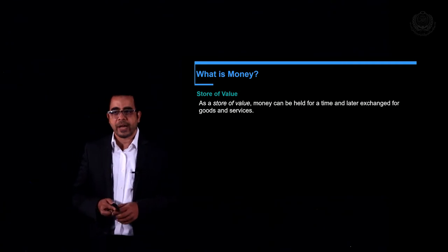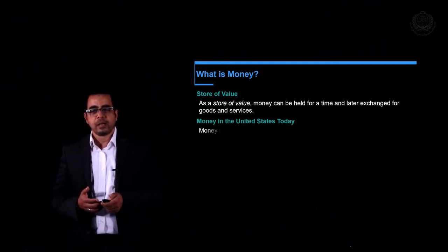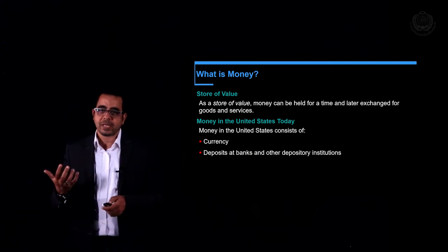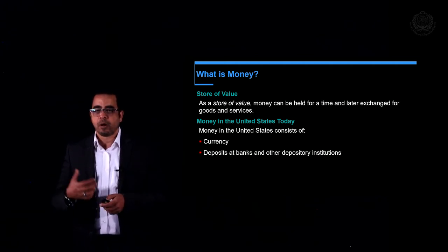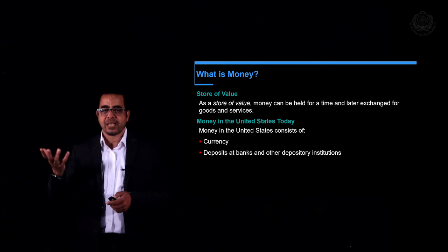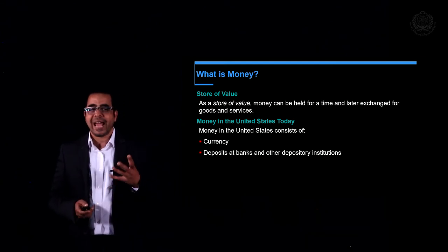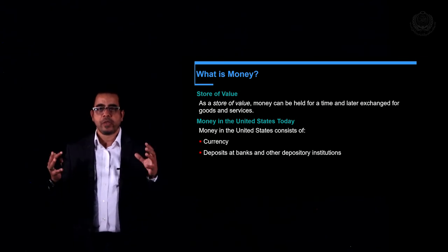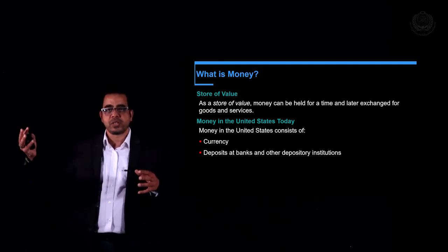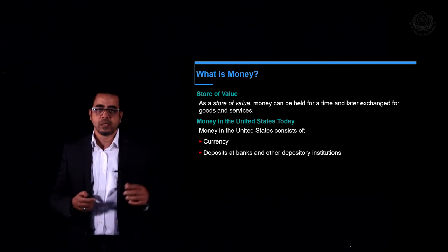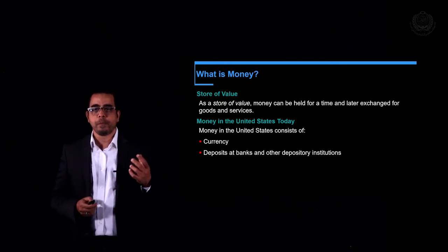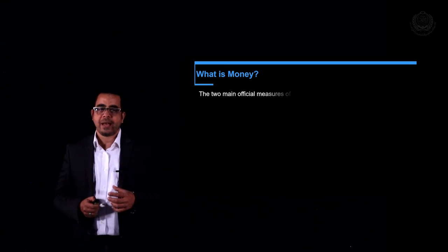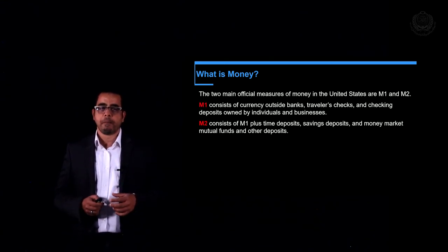If we define money in our modern days, it is the currency we hold in our wallets, homes, and hands, plus deposits at banks and deposit institutions. Deposit institutions are institutions that receive deposits and make loans. We have two measures for money: the narrow measure and the broad measure.